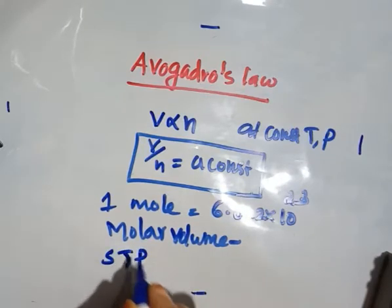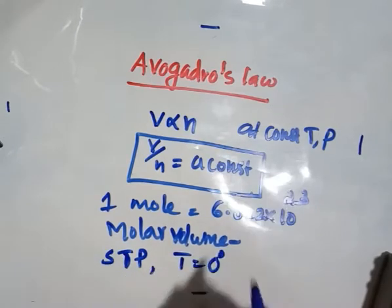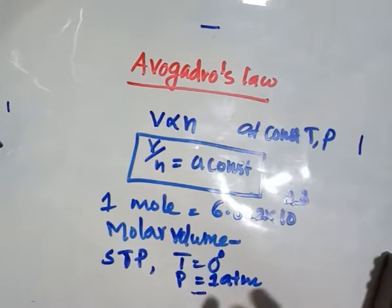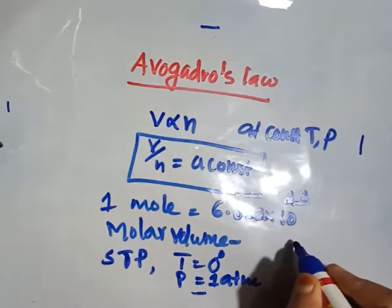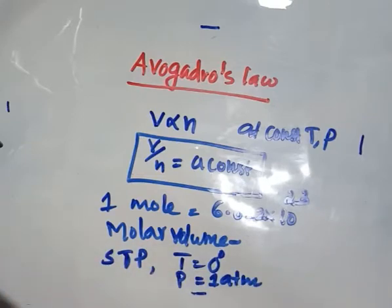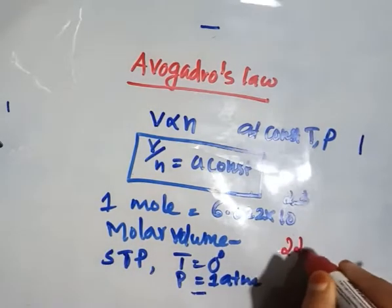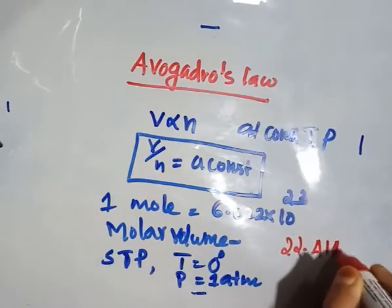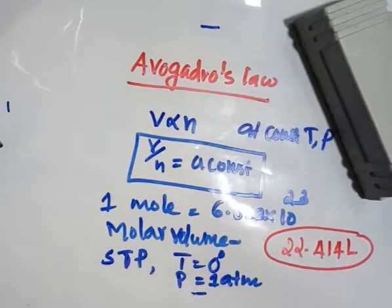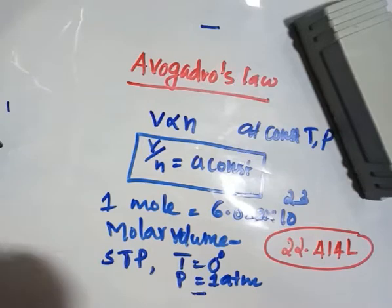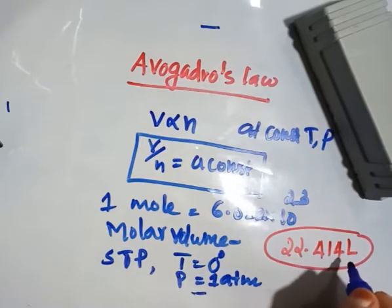STP means standard temperature and pressure: temperature is 0 degrees Celsius, that is 273 Kelvin, and pressure is 1 atm. Experiment shows that the molar volume of an ideal gas at STP is equal to 22.414 liters.